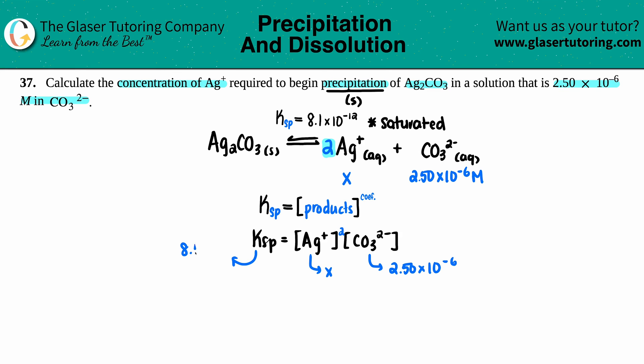Let's plug it in: 8.1×10⁻¹² equals x² times 2.50×10⁻⁶. Divide both sides by 2.50×10⁻⁶ to get rid of that number.